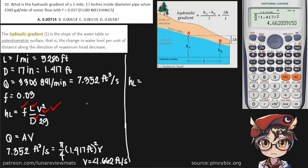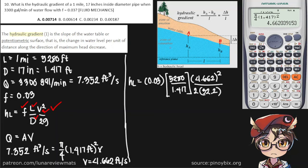HL is equal to friction factor 0.03. Now we already have the units in feet so I'm not going to write them anymore. Times 5,280 over 1.417 times the velocity squared, 4.662 squared, divided by our gravitational acceleration in terms of foot per second squared. This should give us a value of 37.78 feet.